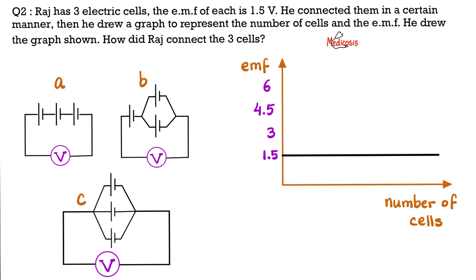Well, as you see here, Raj keeps connecting the cells. Here's the first cell, the second cell, the third cell. It doesn't matter. The more cells he adds, nothing happens to the emf. So, the total electromotive force for the battery did not change, which means that Raj must be connecting them in parallel.